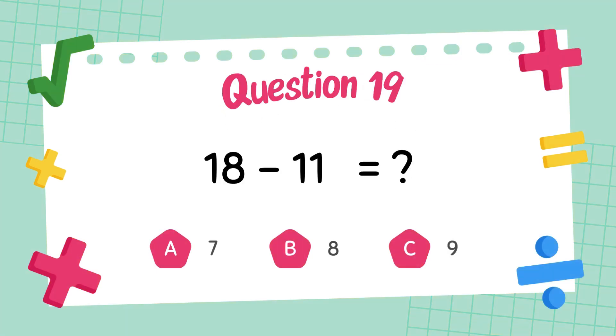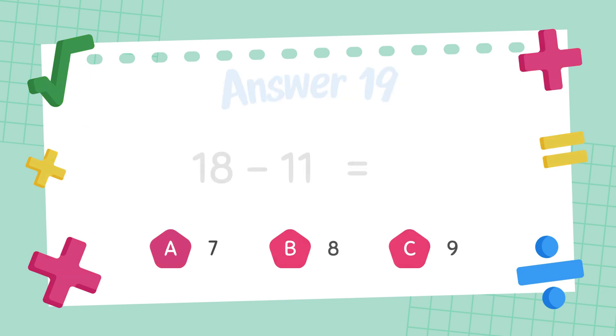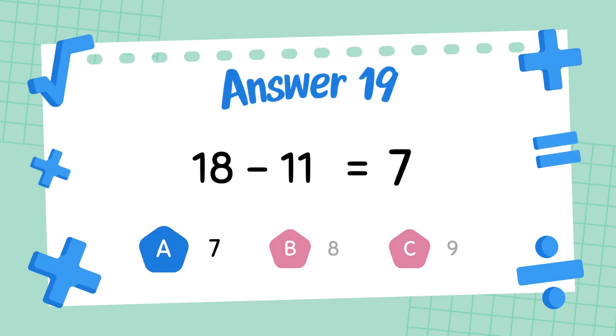What is 18 minus 7? The answer is 8. What is 18 minus 11? The answer is 7.